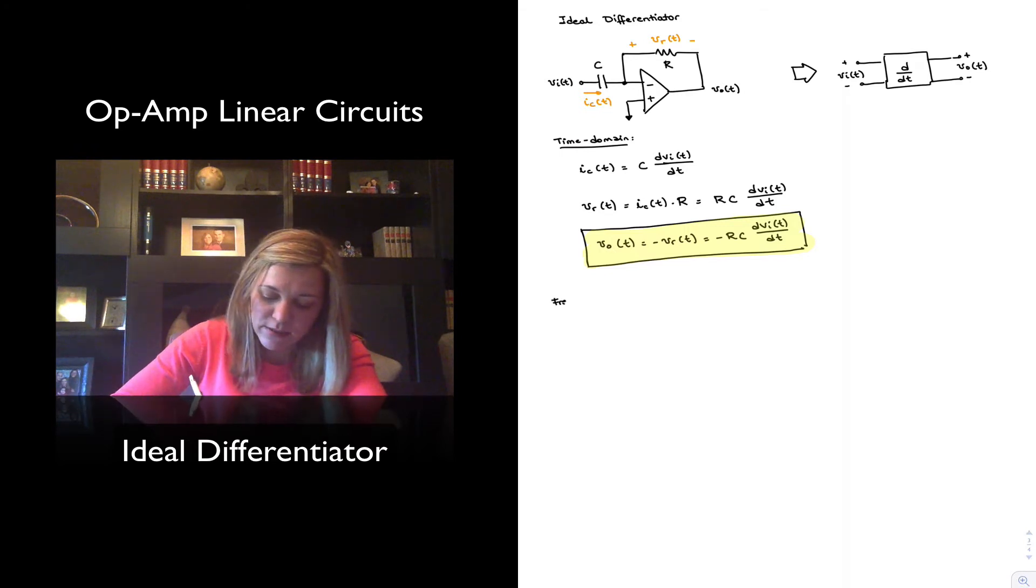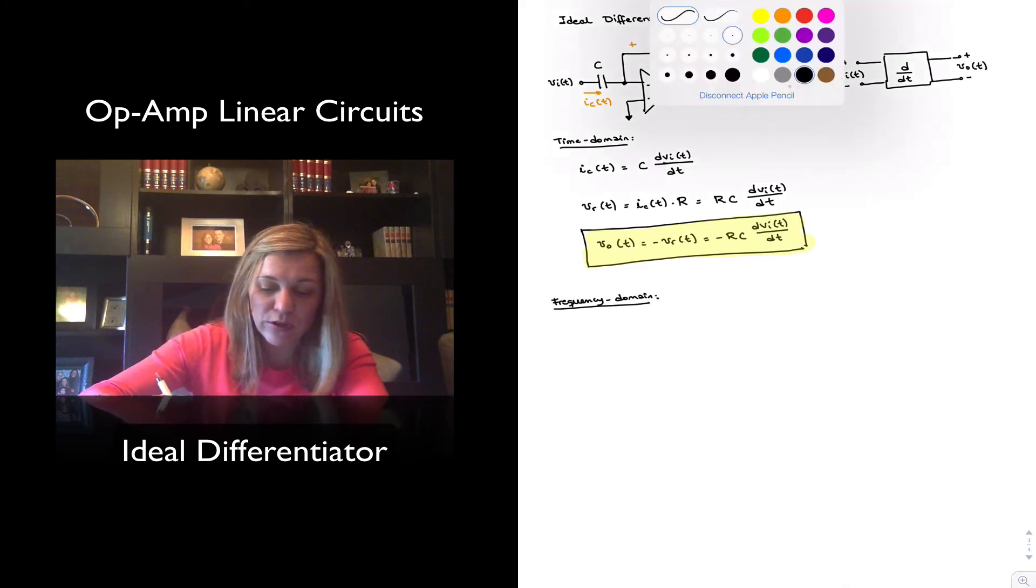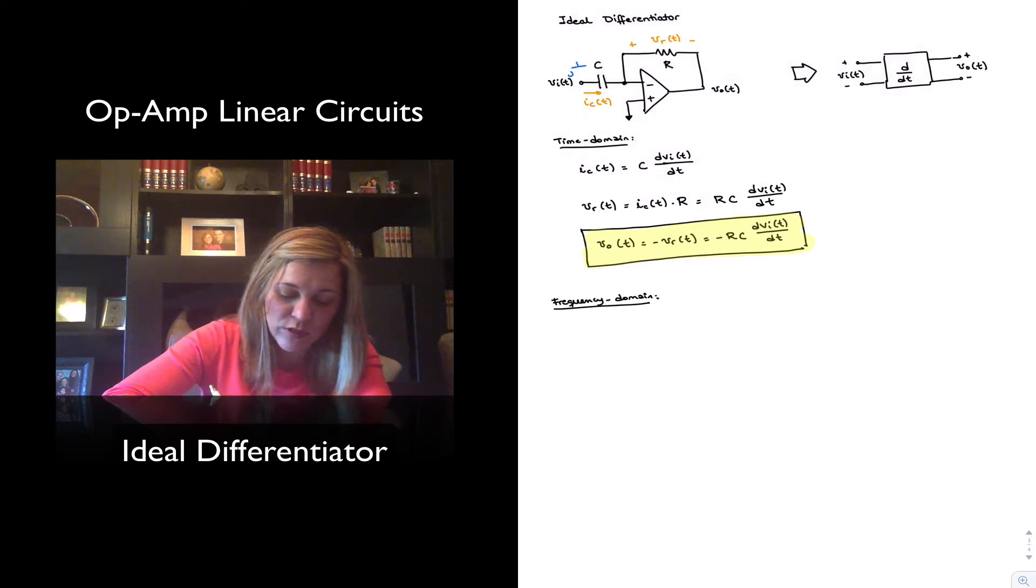If we were to analyze the circuit in the frequency domain, we will be instead replacing the resistor and capacitor by their impedance values. In the case of the capacitor, 1 over jωC. In the case of the resistor, simply R.